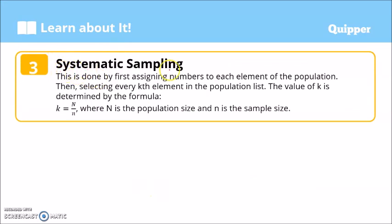Next, we have systematic sampling. This is done by first assigning numbers to each element of the population. Same as simple random sampling, each name in the list or each element in the list are assigned numbers. Then, the difference in systematic sampling is we select every kth element in the population list. What is the kth element? We compute for the value of k. The value of k is determined by the following formula: k equals N over n. Big N is the population size, and small n is the sample size.